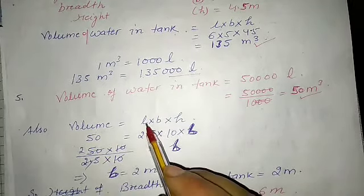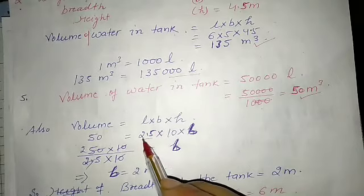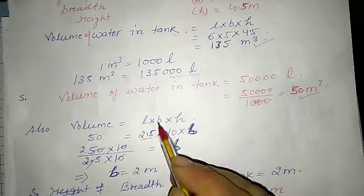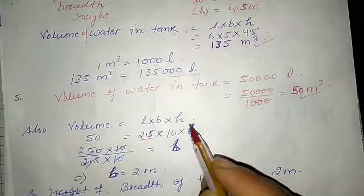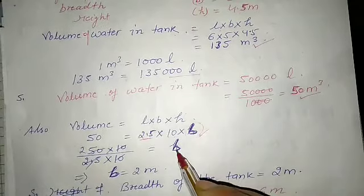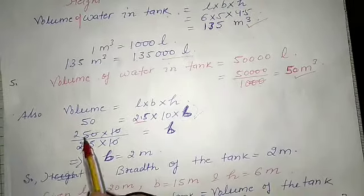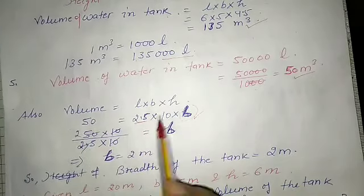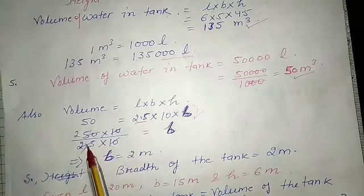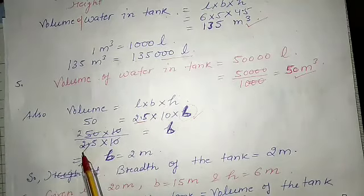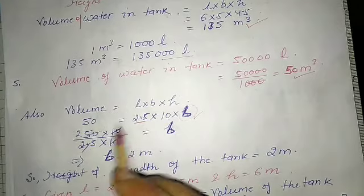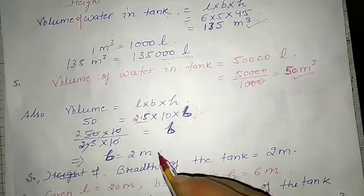Transposing the known values, breadth b = 50 ÷ (2.5 × 10). Simplifying the decimal: 50 ÷ 25 = 2. So the breadth of the tank equals 2 meters.